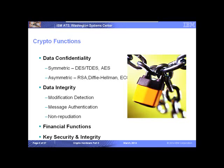There are two different types of data confidentiality algorithms: symmetric algorithms and asymmetric algorithms. With symmetric algorithms, both the encryptor and the decryptor must have access to the same key value. DES, triple DES, and AES are the symmetric algorithms we support on the crypto hardware — triple DES and AES are supported in hardware specifically.